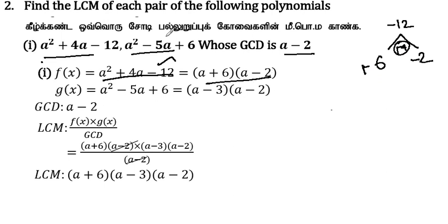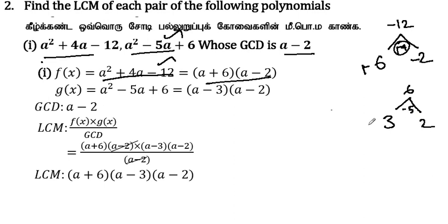Now g(x) is equal to a² - 5a + 6. To factor this, the product is -6 and the sum is -5. We find that 3 into 2 gives 6, and adding -3 and -2 gives -5. So a - 3 and a - 2 are the factors of g(x).